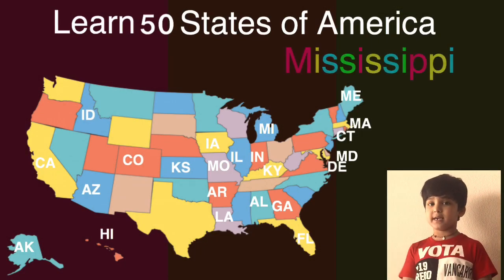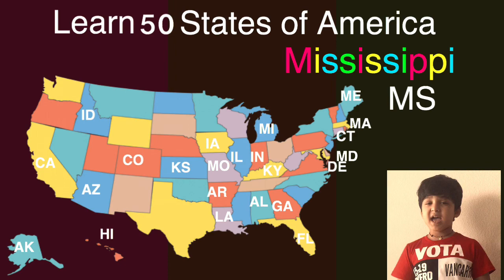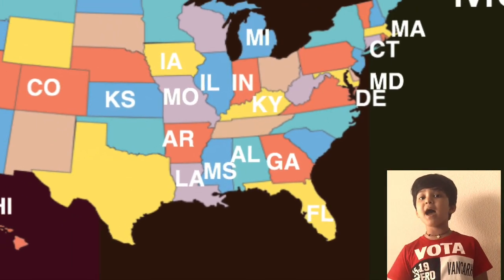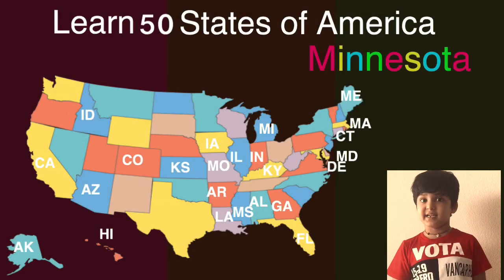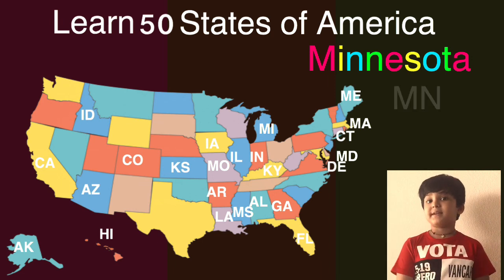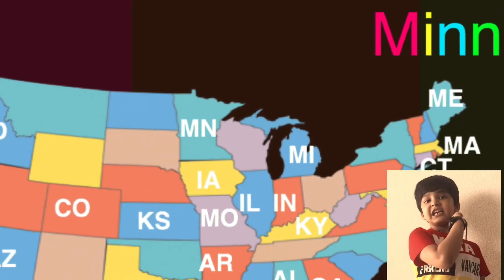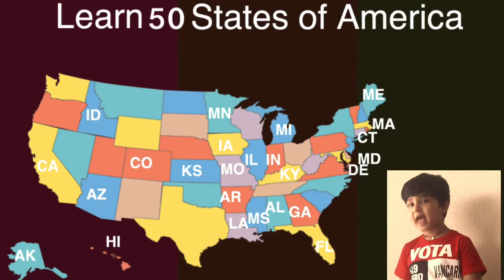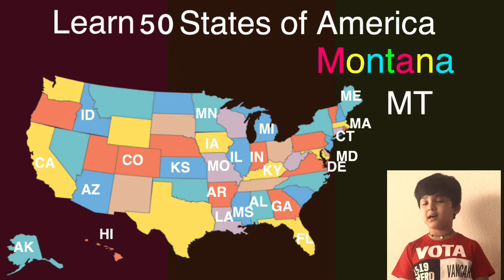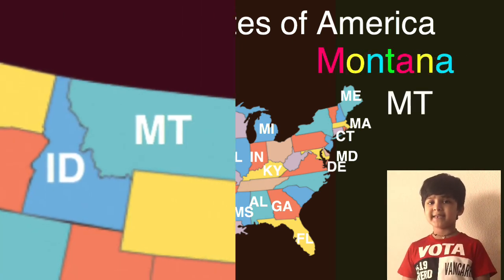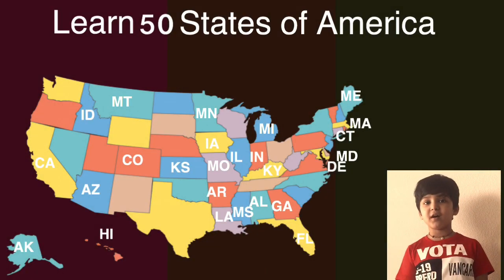The next one is Mississippi and the short one is MS. Here comes Mississippi on the map, can you guess what will come next? The next one is Minnesota and the short one is MN. Here comes Minnesota on the map, can you guess what will come next? The next one is Montana and the short one is MT. Here comes Montana on the map, can you guess what will come next?